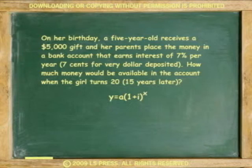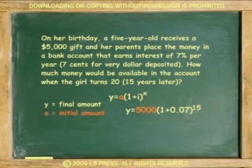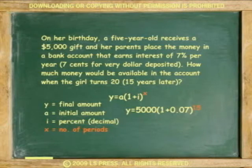Where y is the final amount, a is the initial amount, i is the rate of interest per period in decimal form, also known as the percent, and x is the number of periods — in this case, years.